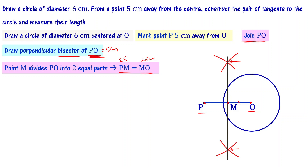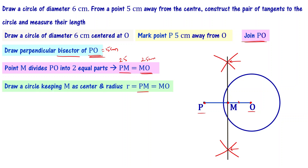The next step is to keep M as the center and draw a circle with radius equal to PM, which also equals MO. Draw this circle and verify that it passes through both P and O. Check with the bisector line — it is correct.